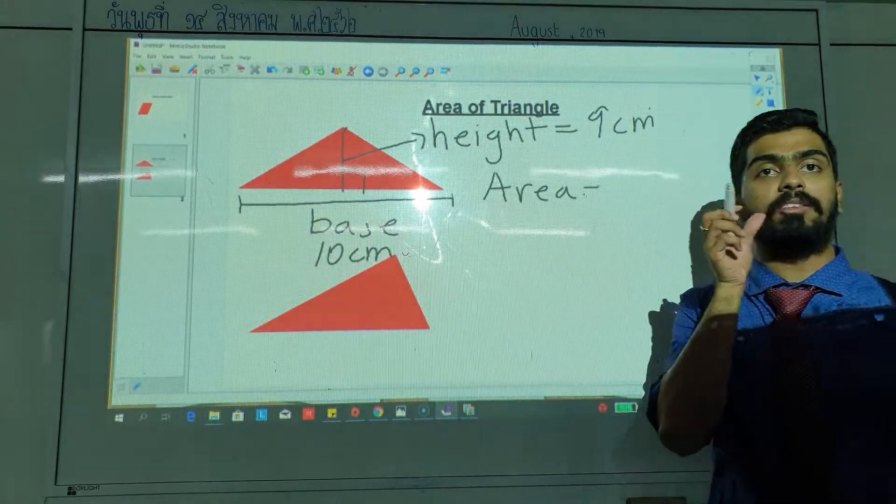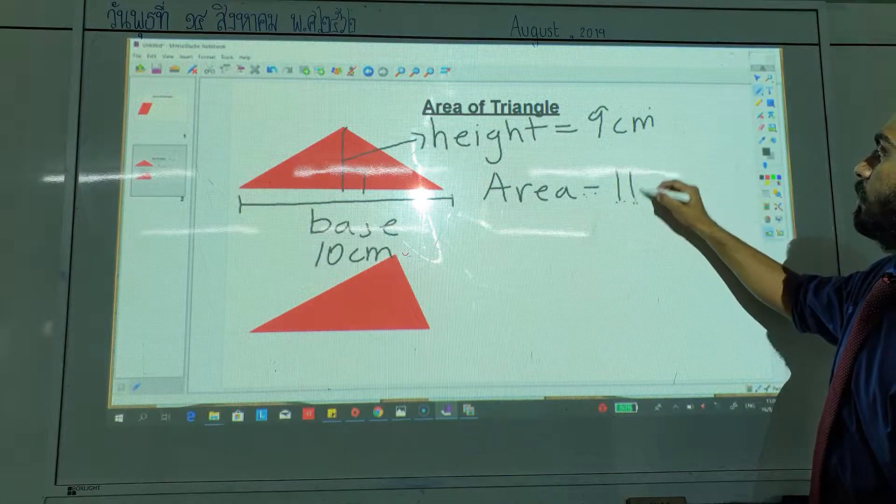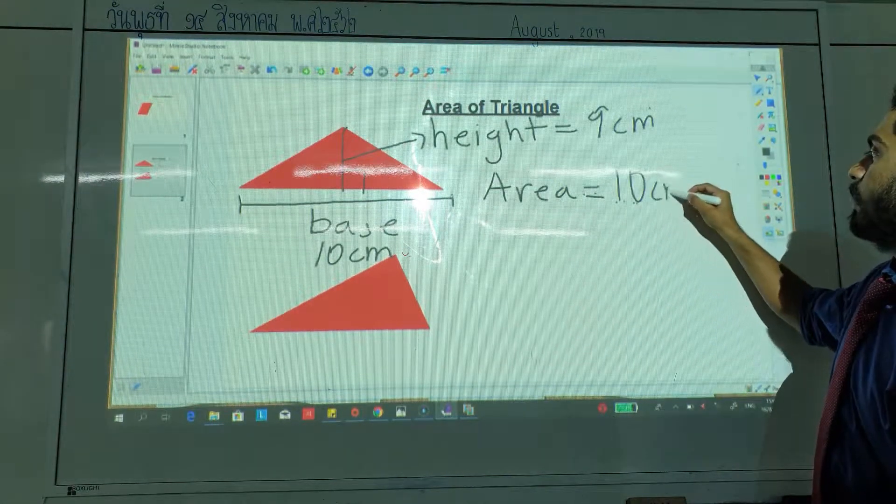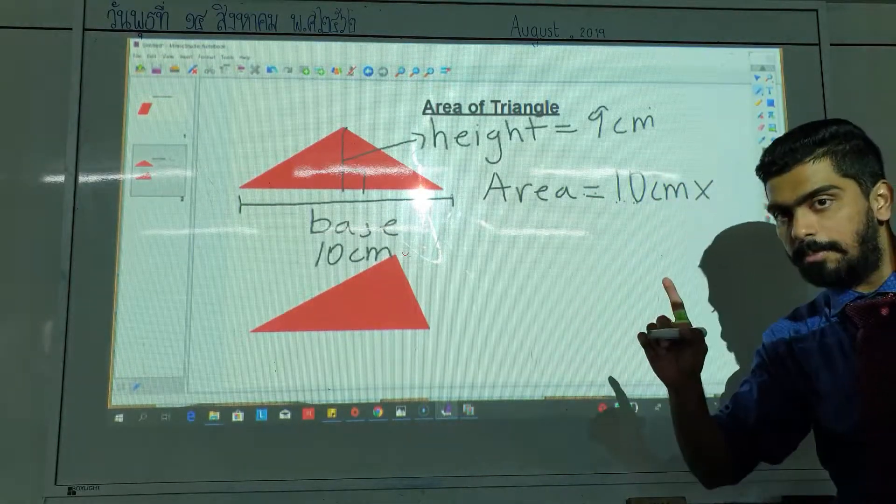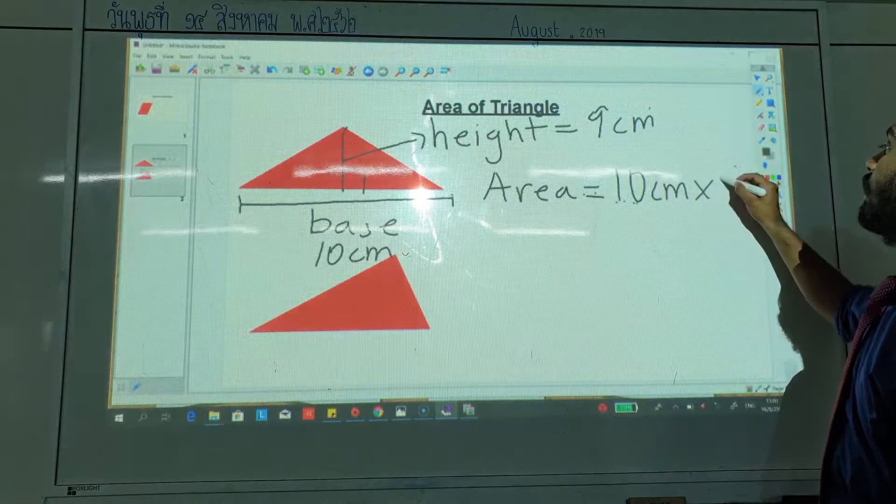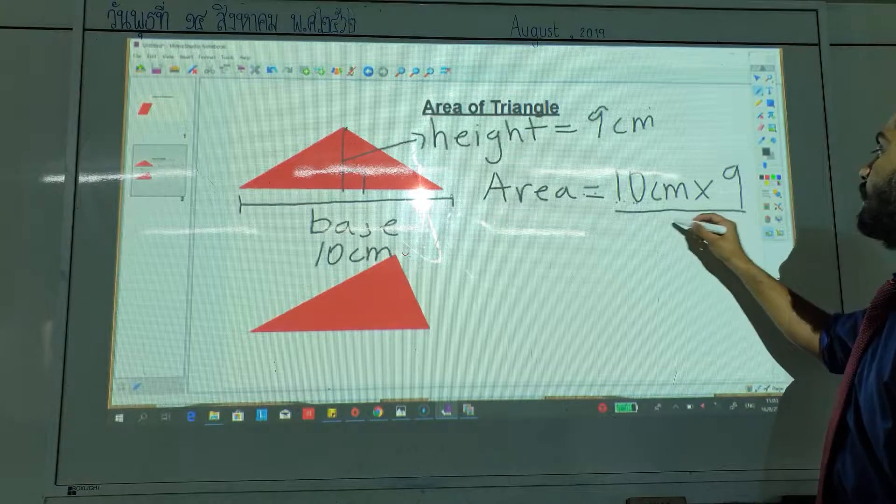How much is the base? 10 cm. So we have 10 cm multiplied by—how much is the height? Nine cm. Nine cm, not 90. Nine cm divided by 2.